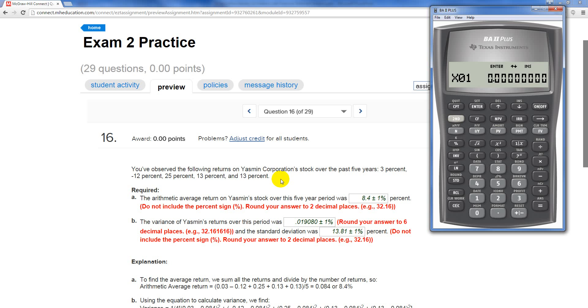Let's enter it as decimal points. And the reason we want to do that is because when we calculate the variance, if we have it in percentages, we are going to be four decimal places off. So let's do it as decimals.